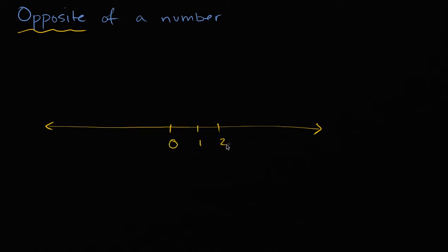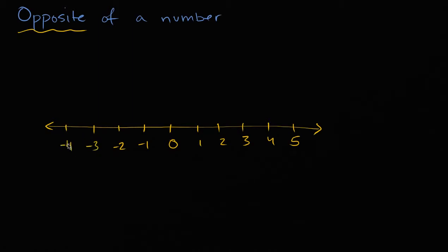Going right: one, two, three, four, five. As we go to the left, we get more and more negative — negative one, negative two, negative three, negative four. And I could keep going on and on and on.